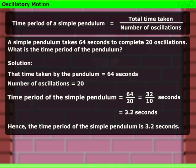Hence, the time period of the simple pendulum is 3.2 seconds.